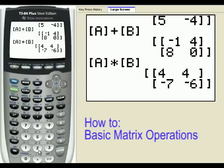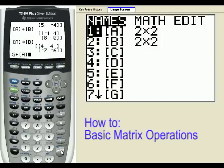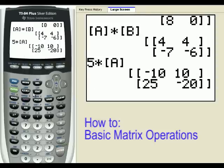I can also multiply by real numbers. For instance, 5 multiplied by matrix A. And we see that every element in matrix A has been multiplied by 5.